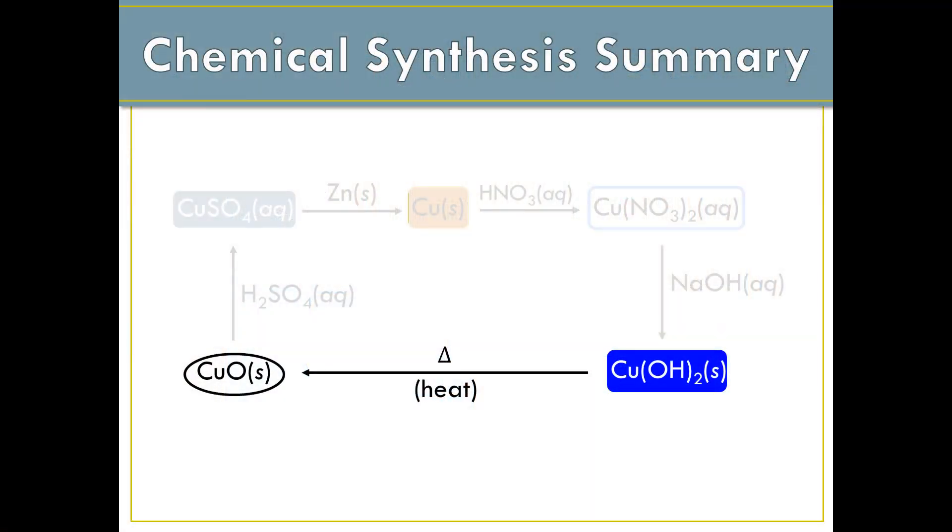The third step of our synthesis is to convert our copper-2-hydroxide to copper-2-oxide. In this dehydration reaction, the starting material loses an equivalent of water from its structure, resulting in one equivalent of water as a waste product. To dehydrate your copper-2-hydroxide, all you need to do is heat it.